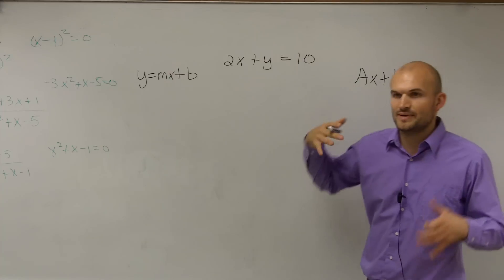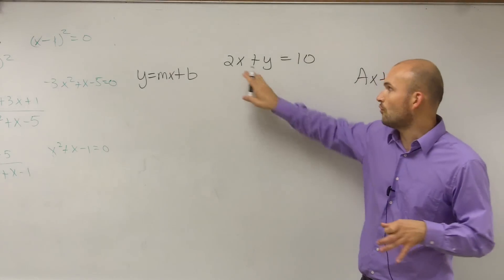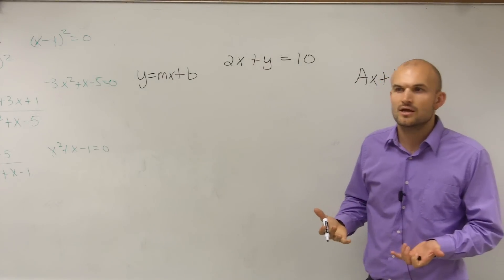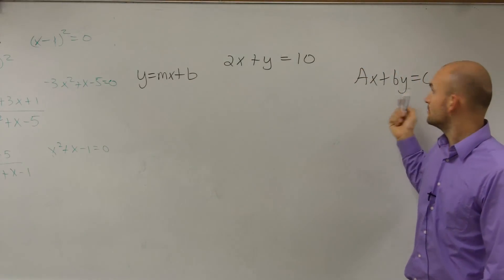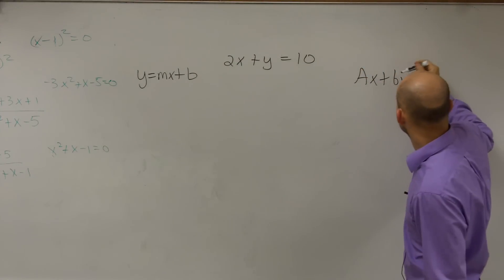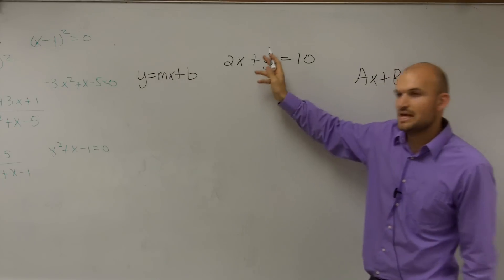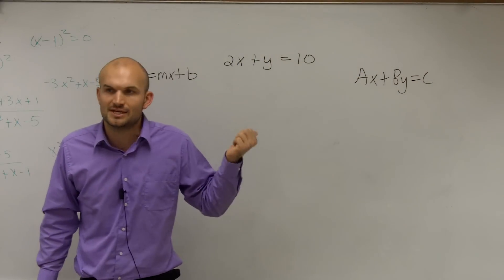So all we need to do is we need to say, can we transform this into either one of these equations? Well, since I noticed this is already in this format, where B is my, I don't know why I did lowercase b, but you could see that my B is my 1, I automatically know that this is a linear relation.